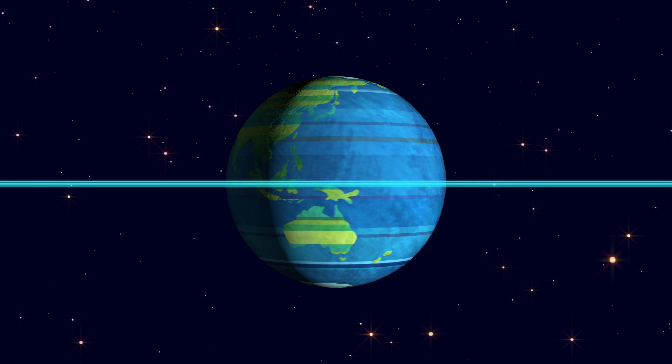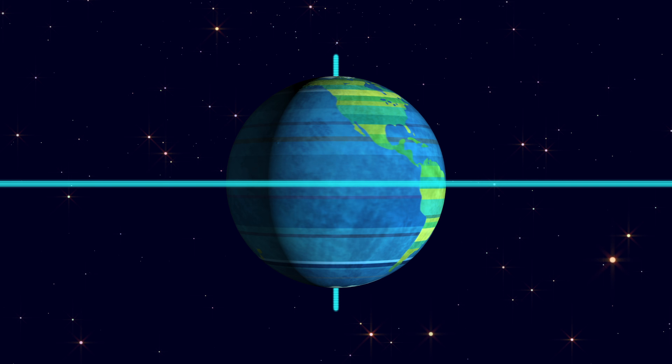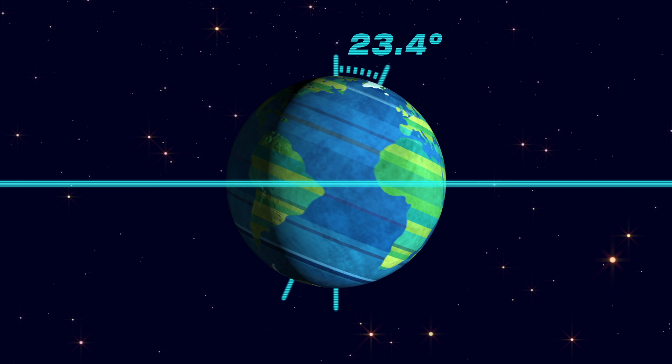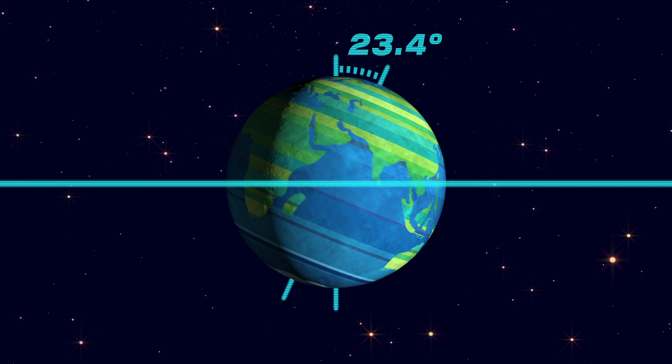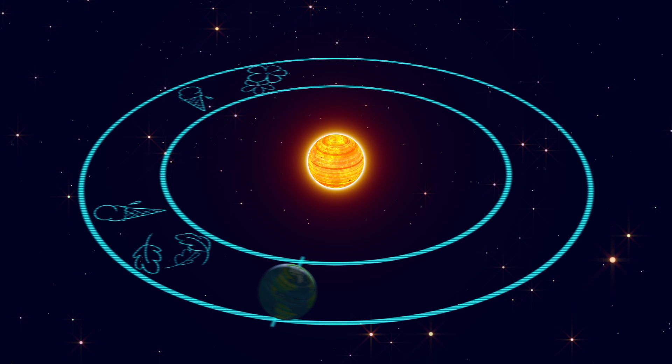But there's a twist. Relative to the plane of its orbit, the Earth doesn't spin with the North Pole pointing straight up. Instead, its axis has a constant tilt of 23.4 degrees. This is known as the Earth's axial tilt, or obliquity. A 23 degree tilt may not seem important, but it's the main reason that we experience different seasons.